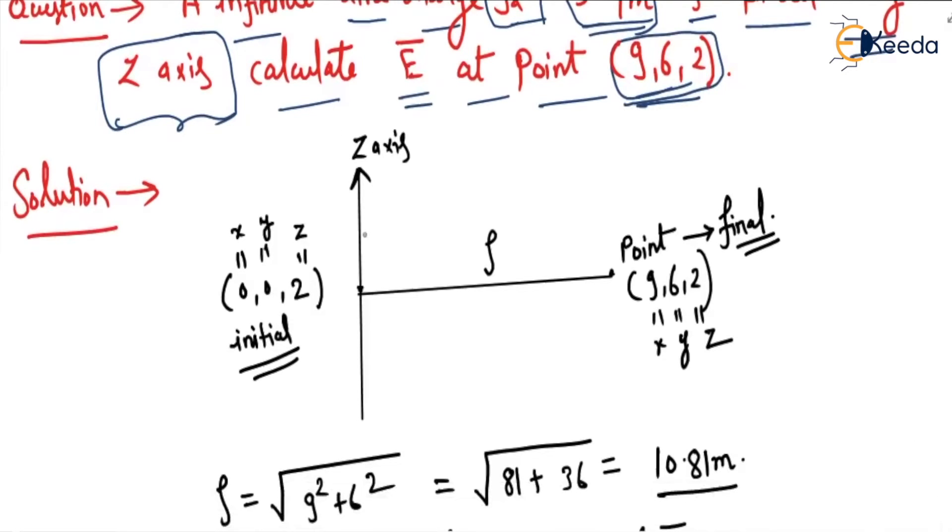Now let me draw a figure. This is the z-axis where the line charge is kept, and the point is (9, 6, 2).